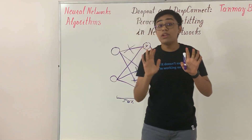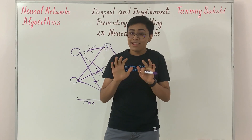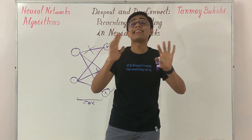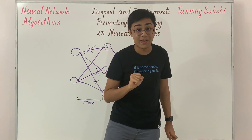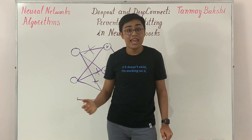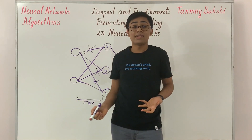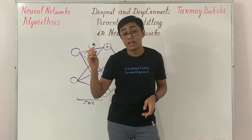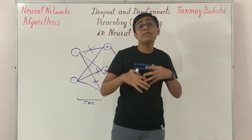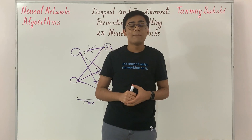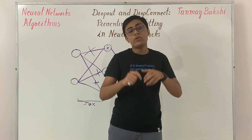One important note: dropout and drop connect are only applied during the backward pass, not the forward pass. A learning phase indicator tells the algorithm whether to apply dropout. During a forward pass, you want all neurons influencing the final output. The performance of these techniques is remarkable for such simple methods — they can be applied to MLPs, CNNs, and RNNs, though CNNs don't usually play well with dropout.